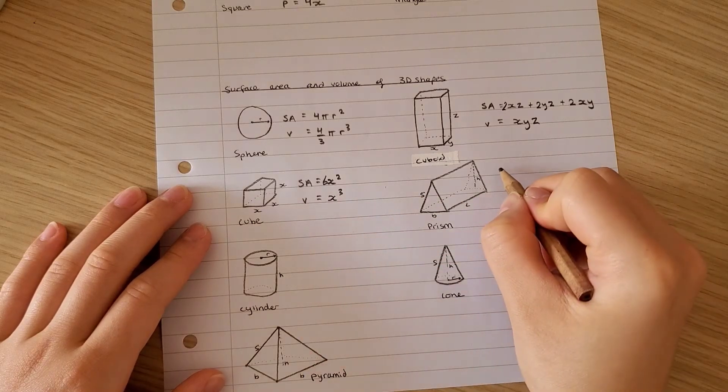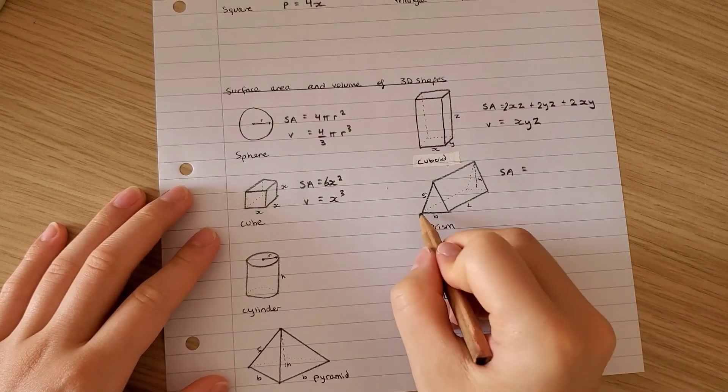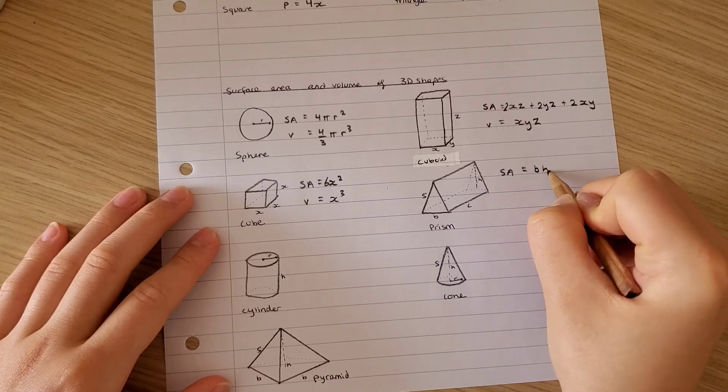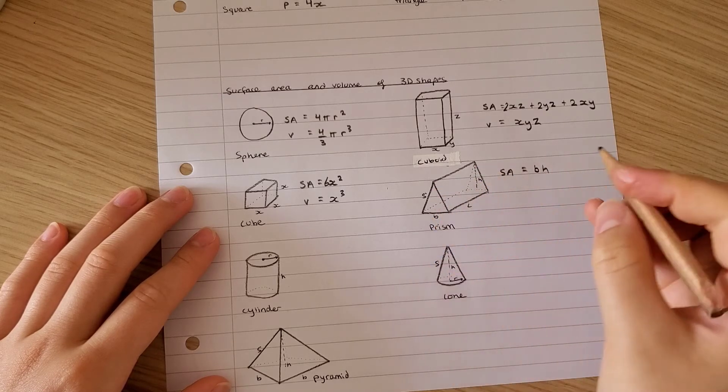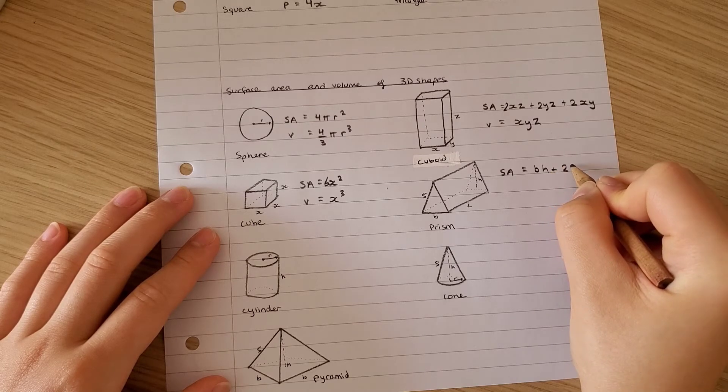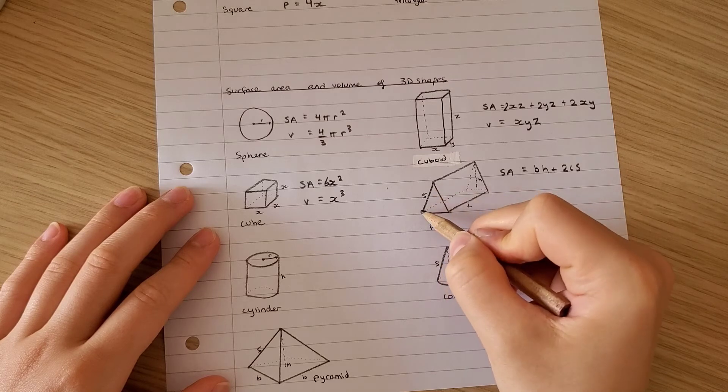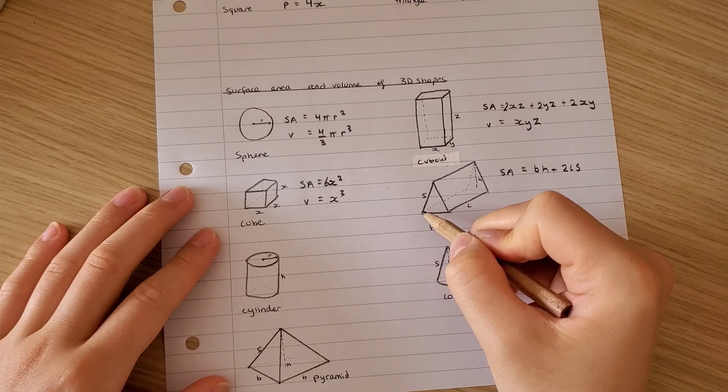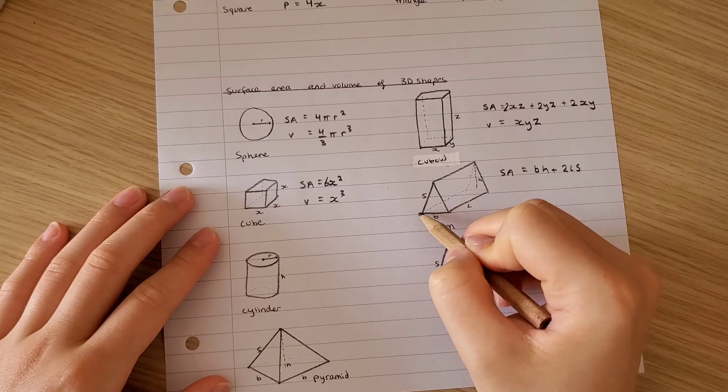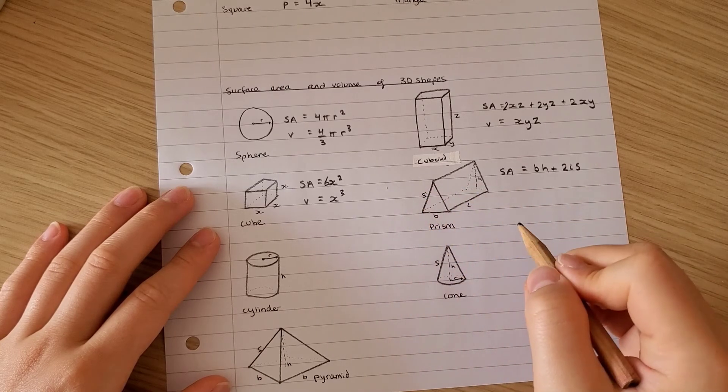Surface area for a prism: this takes into account the base, x times x times the height, so the height of the prism, plus this also takes into account the slanted side, which is this value. You can work out this value through the Pythagorean theorem if you drew a line here and use the hypotenuse, adjacent, and opposite to calculate this given you have the values.